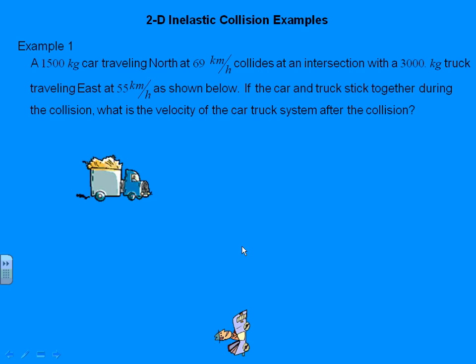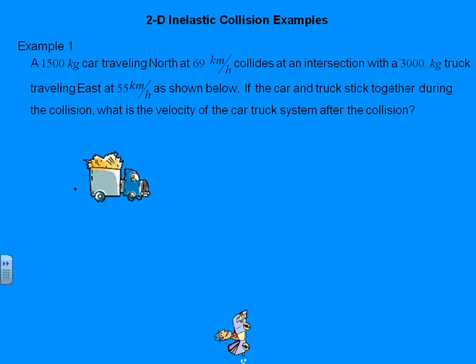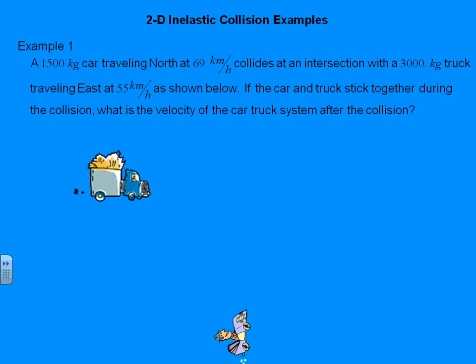Greetings, everyone, and welcome to 2D Inelastic Collision Examples. Here's a classic example. Number one: a 1,500-kilogram car traveling north at 69 kilometers per hour collides at an intersection with a 3,000-kilogram truck traveling east at 55 kilometers per hour, as shown below.